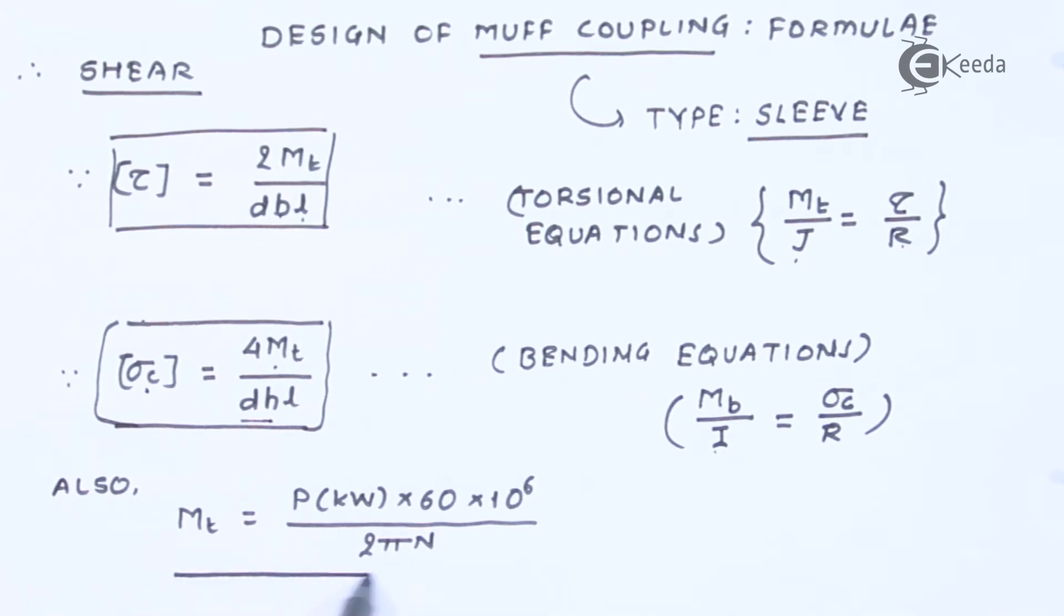The last formula that we are interested in is the power transmission and that is a very famous formula where M_t will be obtained in terms of Newton millimeter. The power we substitute in terms of kilowatt and the rest of the formula in terms of RPM. So with this formula, we can go ahead with the design of MUF coupling.